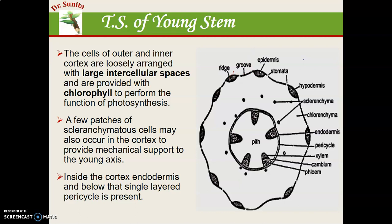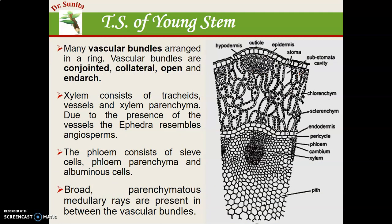This is the outline of the TS of the stem. The wavy line shows the ridges — this outgrowth — and this depression is called the groove. Under the ridges there is sclerenchymatous tissue which provides mechanical strength. After that there is the cortical region: outer cortex and inner cortex. In the cortical region, patches of sclerenchyma are also present in the cortex, providing additional mechanical strength. In the cortical region, spongy and palisade parenchyma consist of chlorophyll tissue, so it is also known as chlorenchymatous tissue.